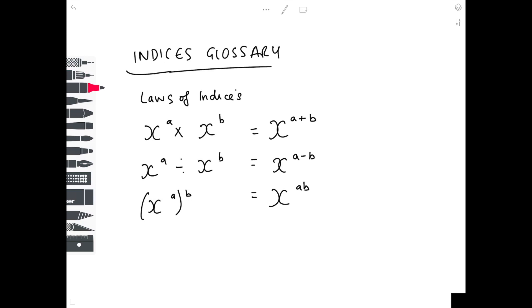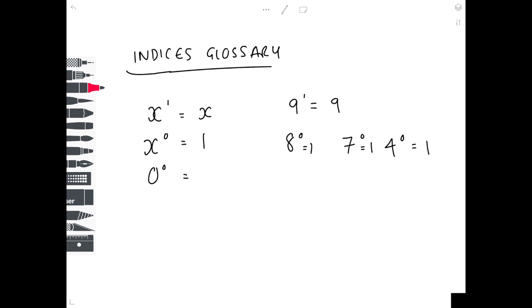Other things you should be aware of that you just need to learn: anything to the 1 is just the thing by itself, so 9 to the 1 would just be 9. Anything to the power of 0 is just 1. It doesn't matter if it's 8 to the 0, 7 to the 0, 4 to the 0 - these numbers all equal 1. The same is true for 0 to the 0, which also equals 1.